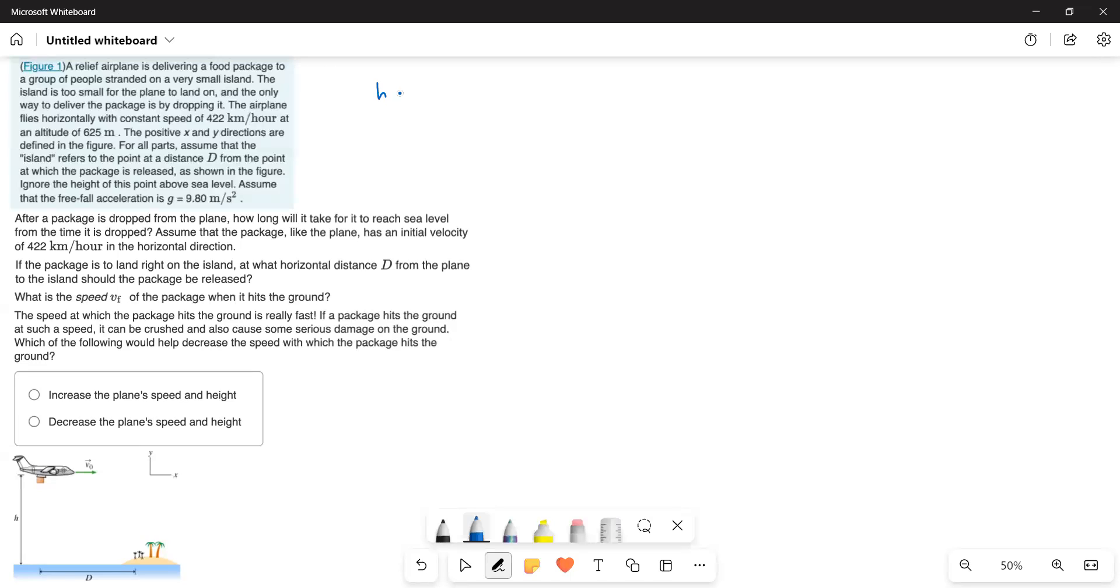So, h is equal to 625 meters. And then a is equal to g is equal to 9.8 meters per second squared. Now, what I have to do is, I have to find out that t is question mark. Now, I use the equation y is equal to v_i t plus half a t squared.